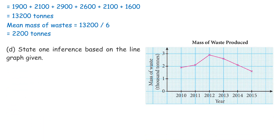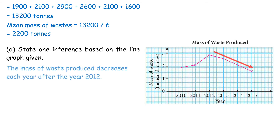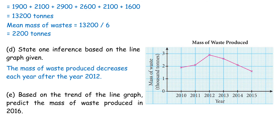D. Inference: the mass of waste produced decreases each year after 2012. E. Based on the trend of the line graph, the predicted mass of waste produced in 2016 is 1,100 tons.